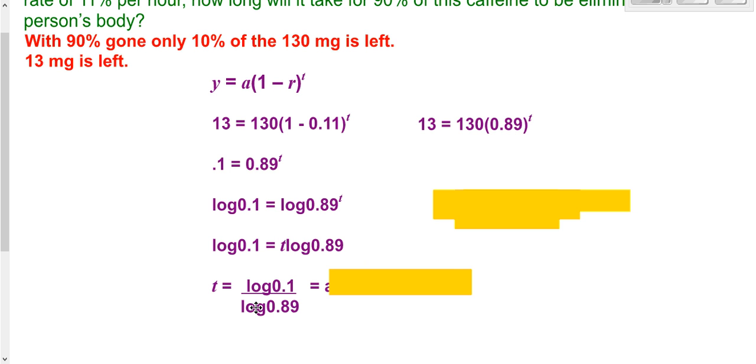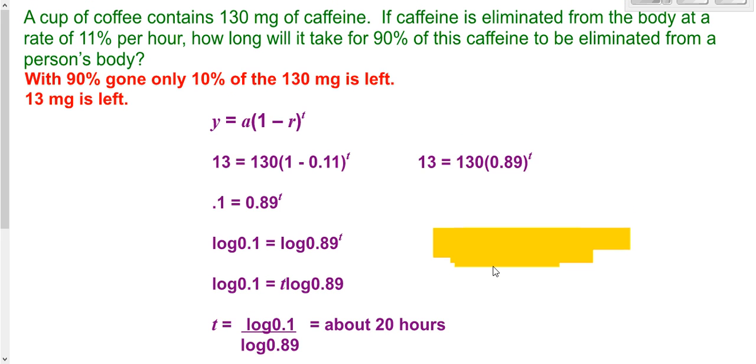If you had chose to use natural logarithms, you'd have the natural log of 0.1 over the natural log of 0.89. It would be the same either way. That would be your calculator-ready form. Then you type it into your calculator. Whether you use natural logs or common logs, you get the same answer of about 20 hours for the caffeine to be 90% out of your body.